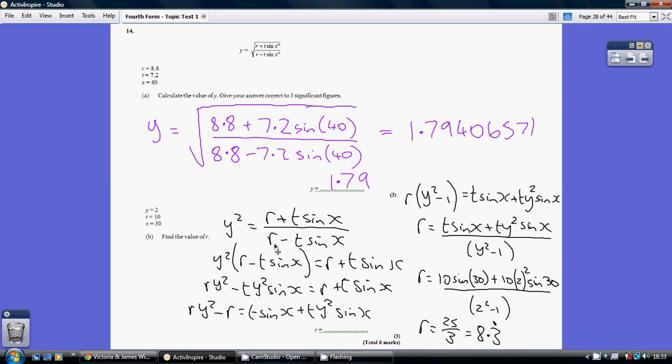Then we undo the dividing by r minus t sin x by multiplying both sides by r minus t sin x. So we've got y squared multiplied by this, which undoes the denominator on the right. We then get rid of the bracket by expanding. So we get ry squared minus ty squared sin x equaling the right-hand side.